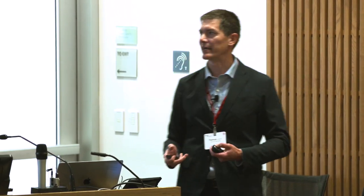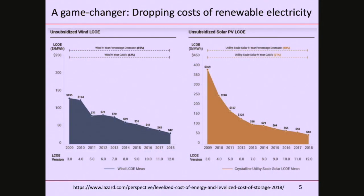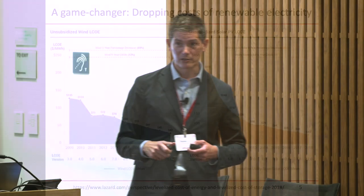One of the game changers is the dropping prices of electricity. These are levelized cost of electricity assessments for wind and photovoltaics. Even just 10 years ago it was really high, and it has been dropping and dropping. In dollars per megawatt hour, if you convert that into cents per kilowatt hour, my home in Menlo Park pays about 20 cents per kilowatt hour, but this is coming out to 4 cents per kilowatt hour. These prices are dropping.